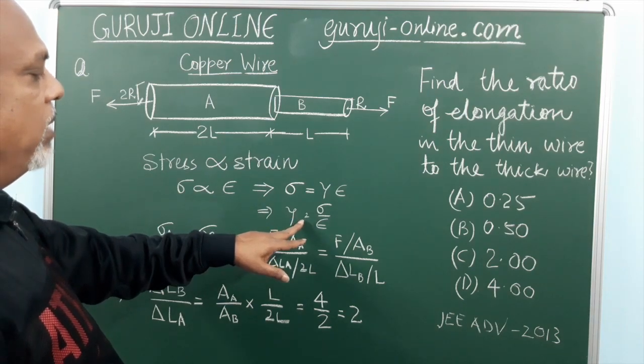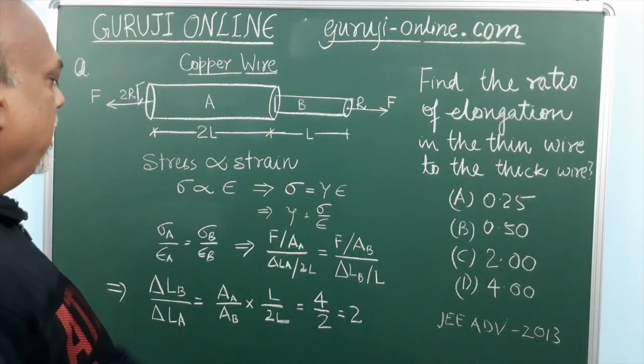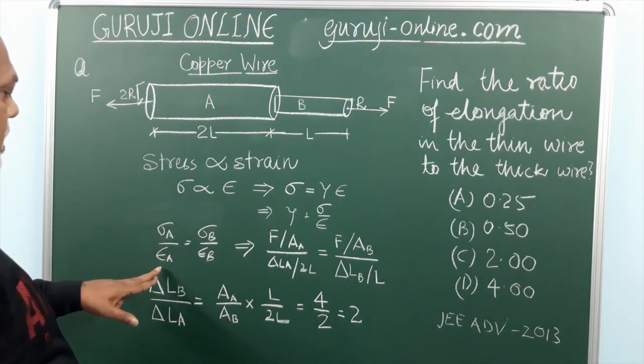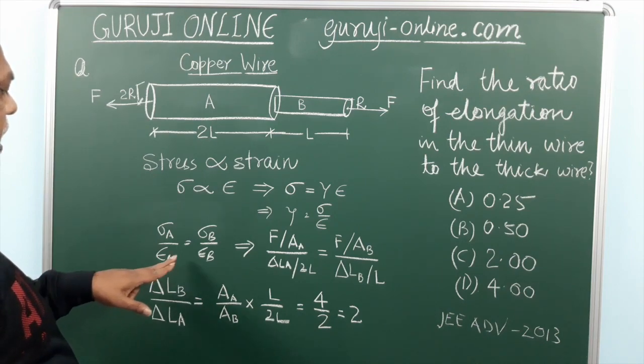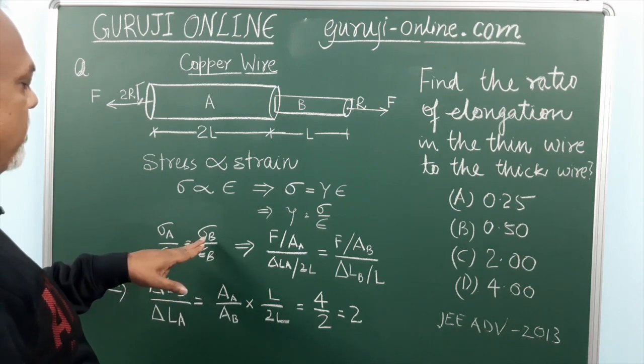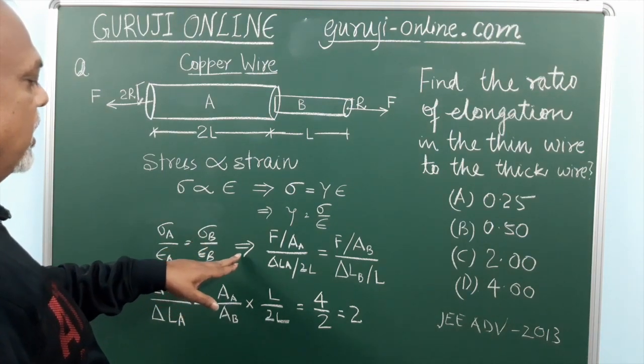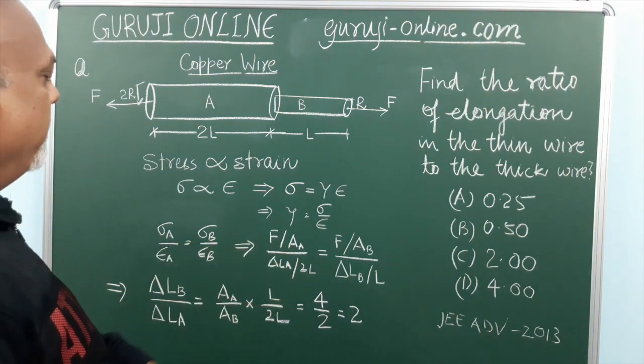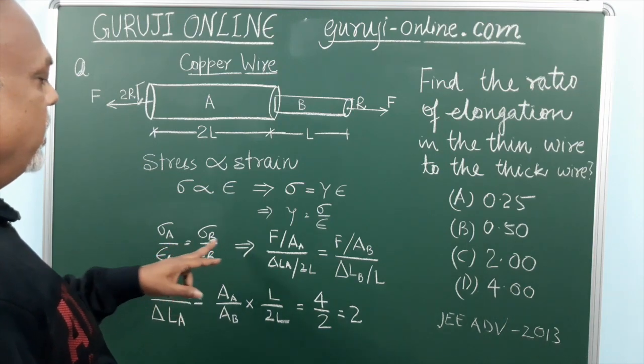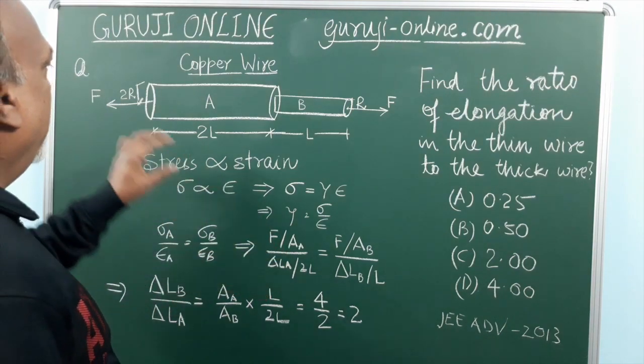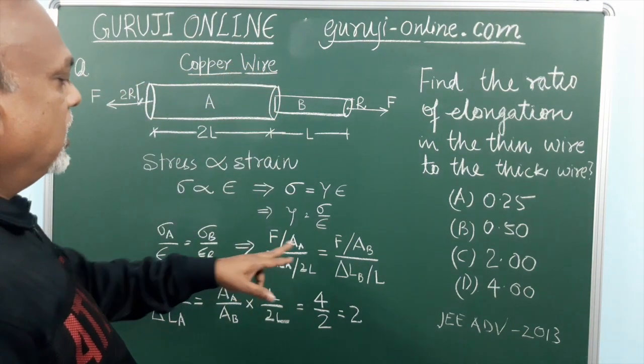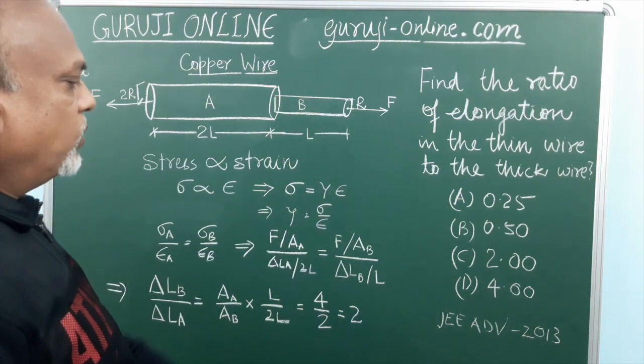So Young's modulus is nothing but equal to sigma upon strain. That is, if we equate from here, sigma A upon strain A is equal to sigma B upon strain B. That is equal to stress, which is nothing but force upon area. Now in this, stress will be F upon area of this and in this portion this will be F upon area of this wire.